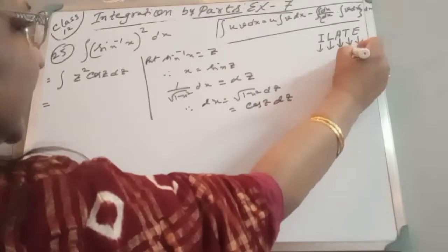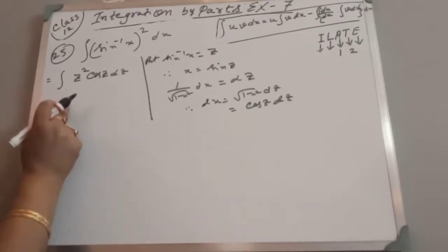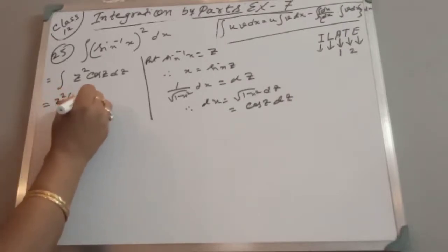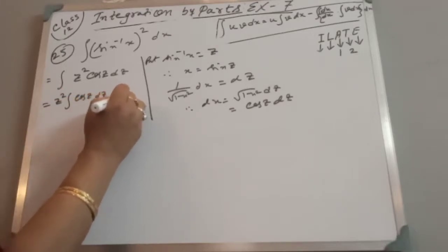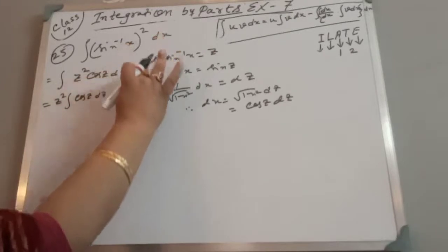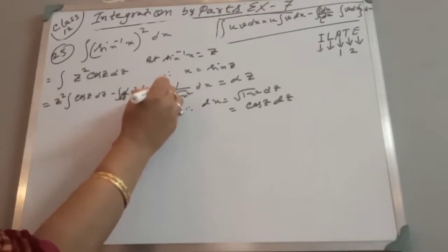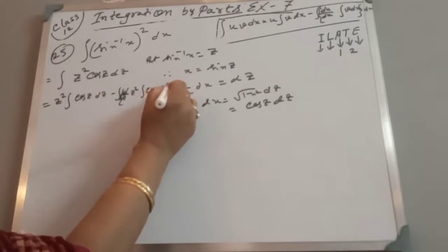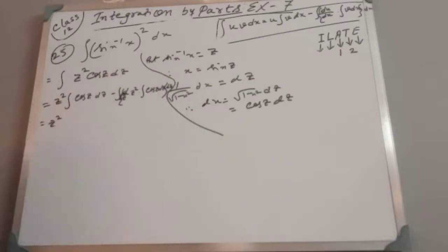According to the ILATE rule, the algebraic function comes first. So z² is taken as the first function (u) and cos z is taken as the second function (v). We write: u · ∫cos z dz − ∫(du/dz · ∫cos z dz) dz.